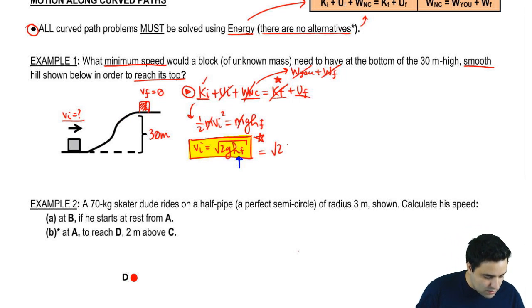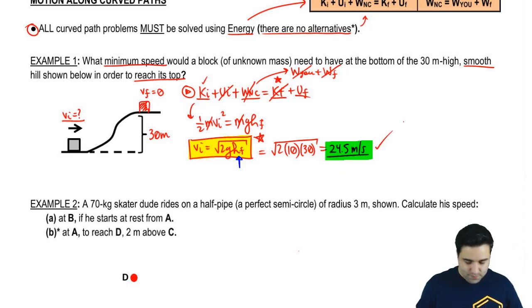Now, we can just plug in some numbers here. This is the easy part. Gravity, I'm just going to round that to a 10 to make it easier. And this is a 30. So this is going to give us the square root of 600 and the answer is 24.5 meters per second. That's it for this one.